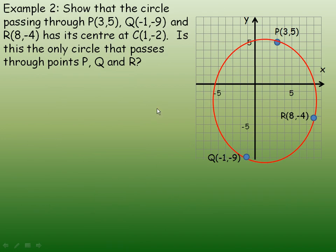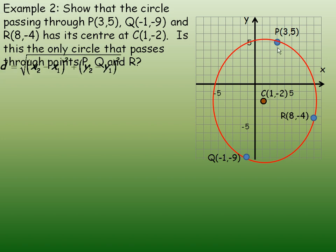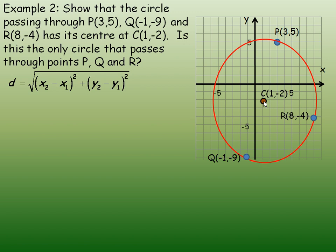One more example: we are asked to show that the circle passing through the points P, Q, and R has its center at (1, 2). We are going to verify that this circle does have its center at (1, 2) by using the distance formula — finding the distance from P to C, R to C, and Q to C, and showing that they are all the same, which would confirm that C is the center.